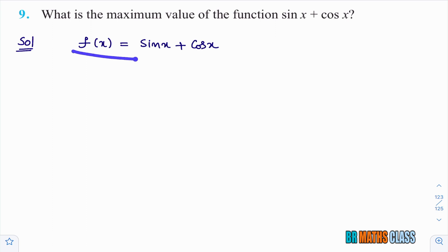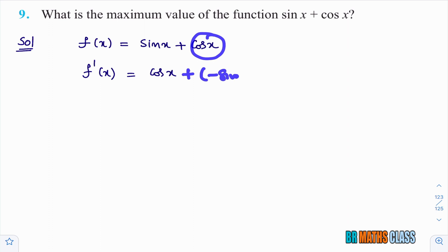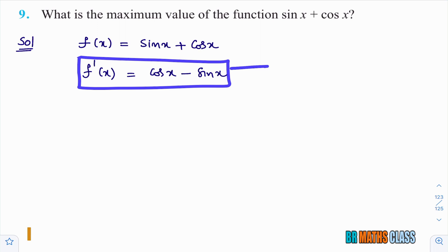Now we'll differentiate this. f dash of x — derivative of sin x is cos x, plus derivative of cos x is minus sin x. So, f dash of x equals cos x minus sin x. Now we need to find the critical points. We'll equate f dash of x to 0 to get the x values.